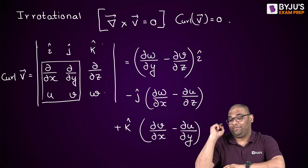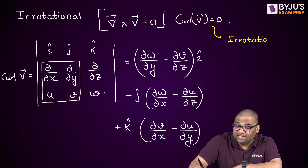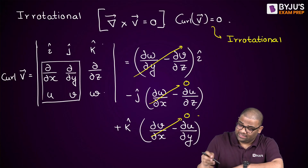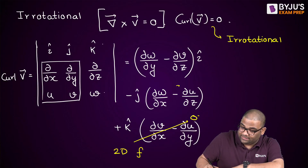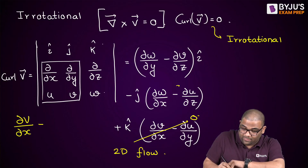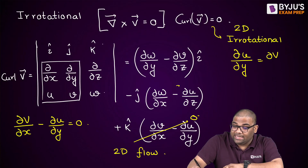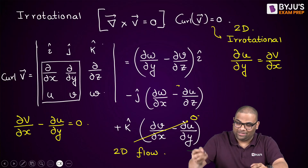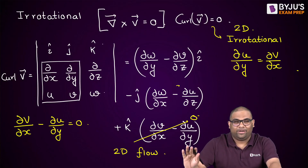For the curl to be zero (irrotational), all three components must individually be zero. In exam questions, 2D flow is typically asked. In 2D flow, w = 0, so only the k̂ component matters. Setting it to zero: ∂v/∂x − ∂u/∂y = 0, which means ∂u/∂y = ∂v/∂x. If these two are equal, the flow is irrotational.